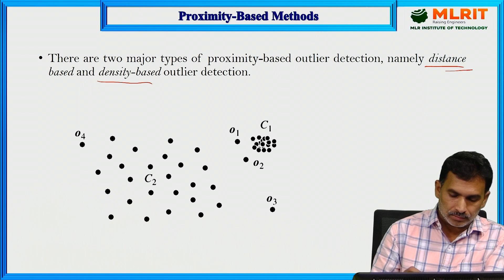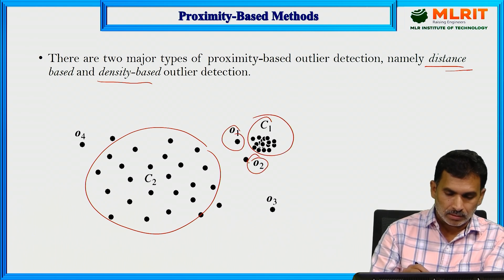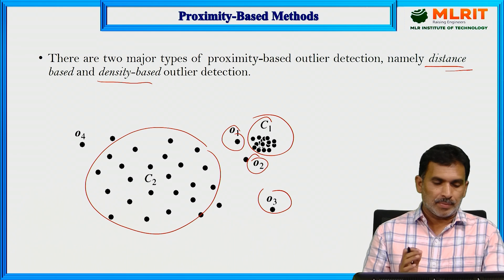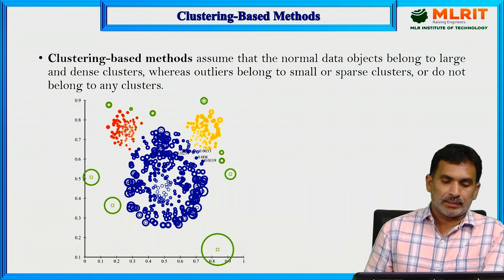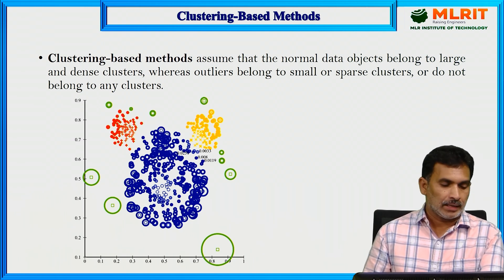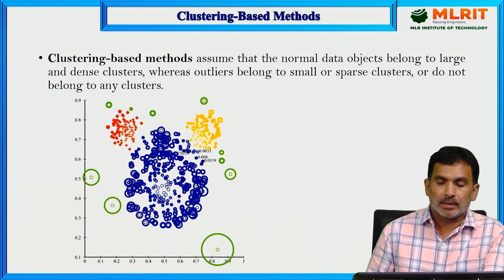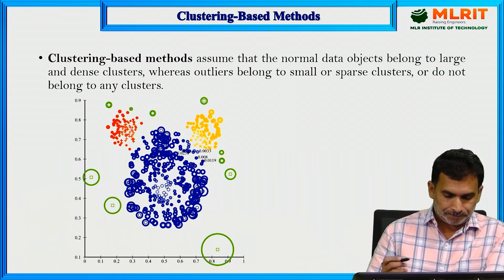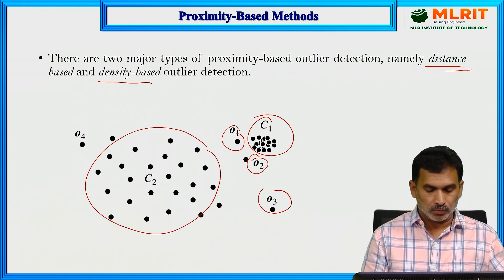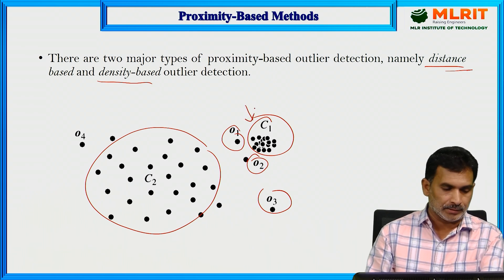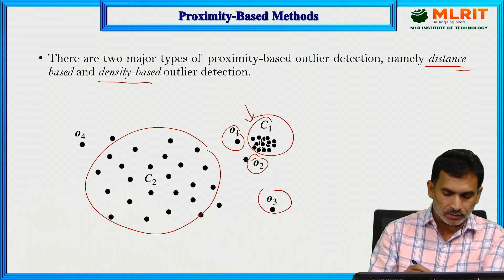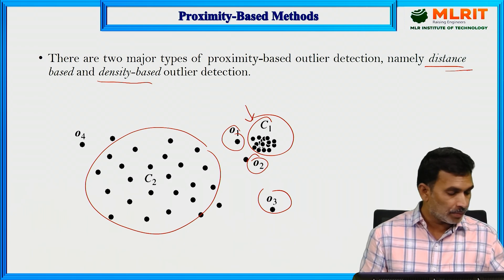As you can see here, there are different clusters — one cluster and another cluster — with some other separate objects. The proximity-based methods are applied based on distance as well as density. Clustering is another method used to detect outliers. It assumes that normal data objects belong to large and dense clusters, whereas outliers belong to small or sparse clusters. As shown in the previous diagram, clusters C1 and C2 are the dense major clusters, and objects not belonging to any cluster — such as objects 1, 2, 3, and 4 — are considered outliers.